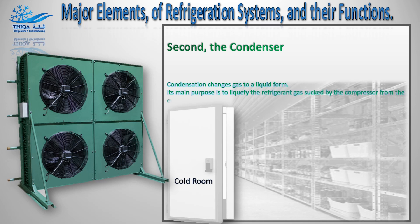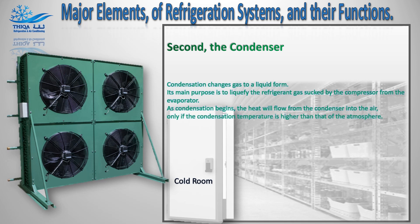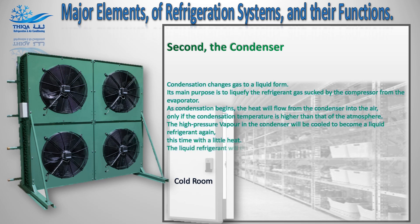As condensation begins, the heat will flow from the condenser into the air, only if the condensation temperature is higher than that of the atmosphere. The high pressure vapor in the condenser will be cooled to become a liquid refrigerant again, this time with a little heat. The liquid refrigerant will then flow from the condenser to a liquid line.